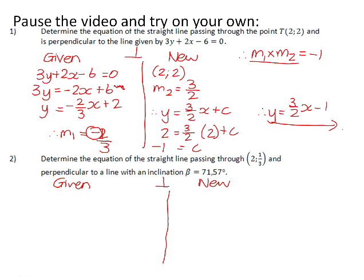What we know about them is they are perpendicular, so the product of the gradients is negative 1. And we also know that the new graph is going to pass through the point (2, 1/3).